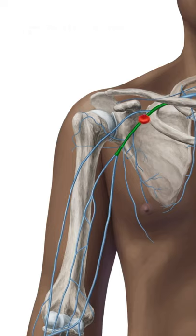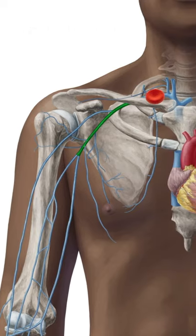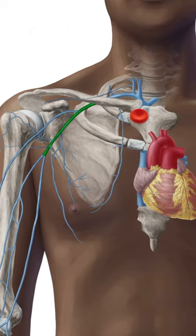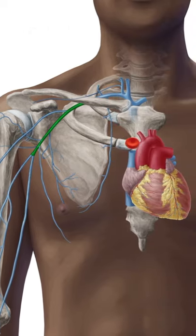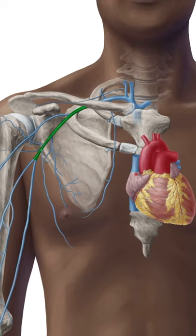Once in the axillary vein, blood goes on to the subclavian vein, where it continues to the heart.